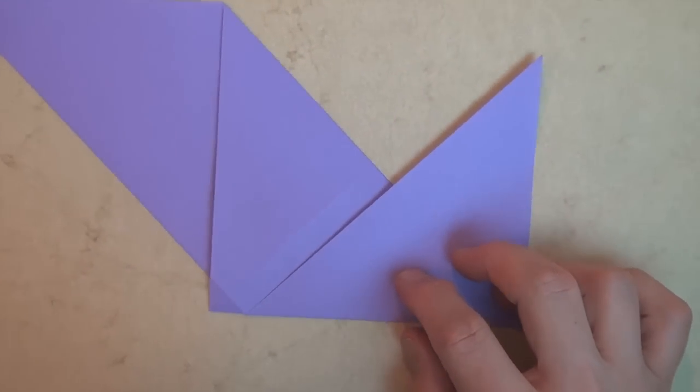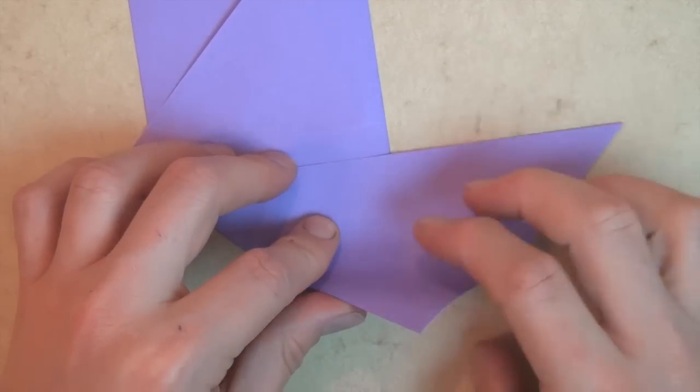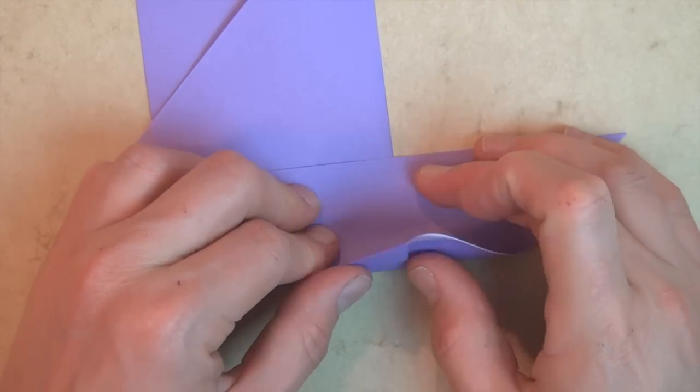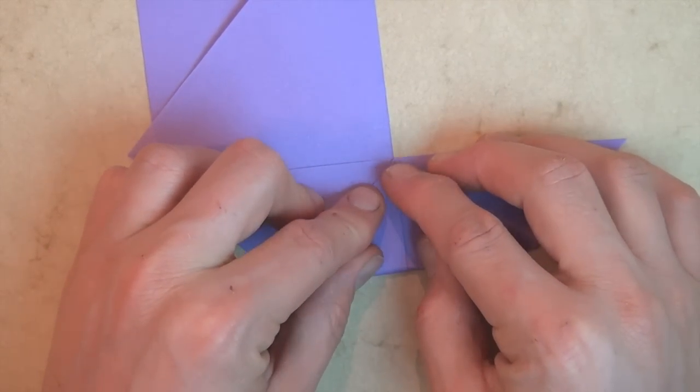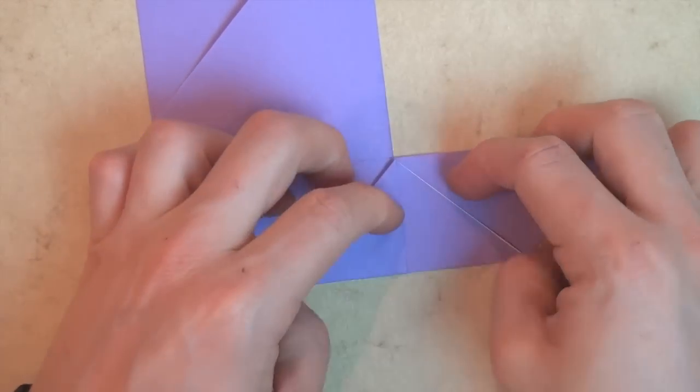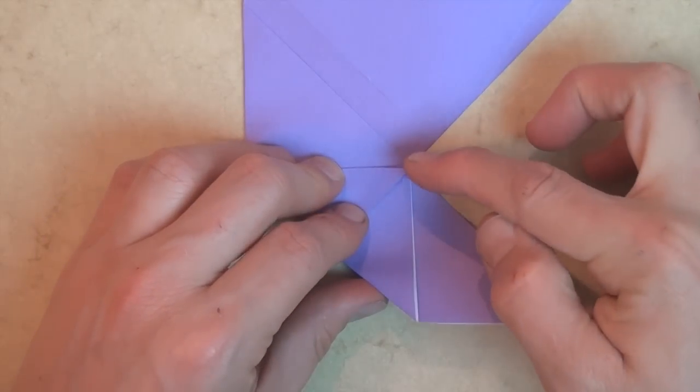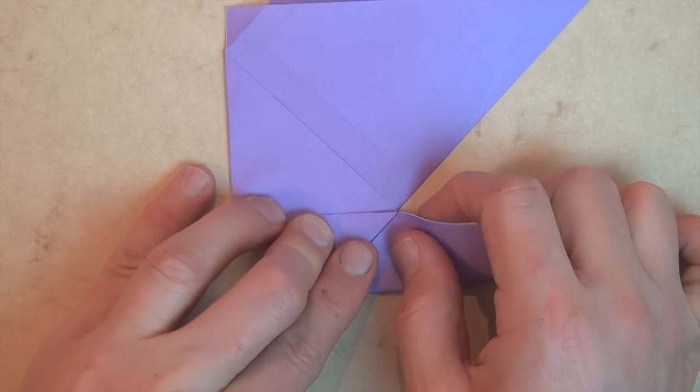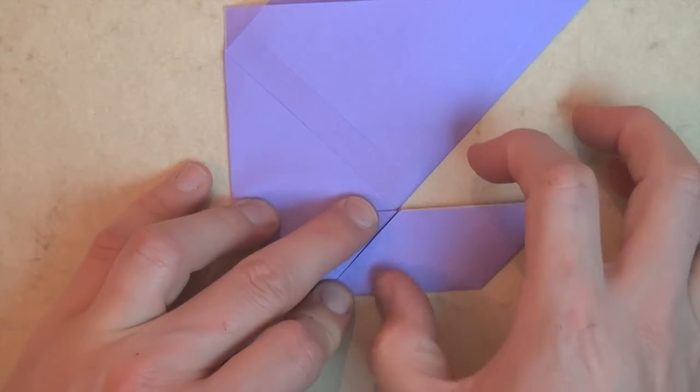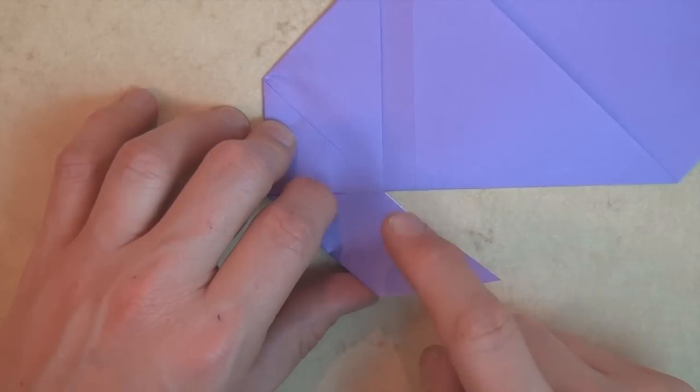And now let's rotate 90 degrees. And now let's fold this corner to this point. And really flatten it, hold it down firmly so that the paper doesn't slip. And rotate. And now fold this corner to here. And rotate.